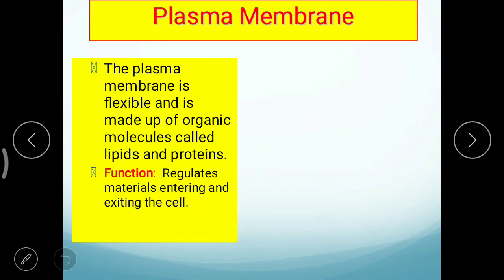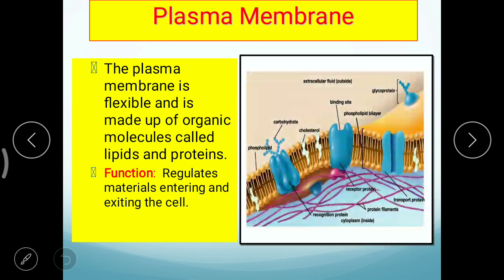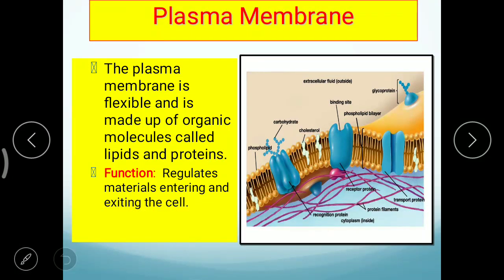Plasma membrane इसमें lipid और protein से बनी होती है — generally glycoprotein and phospholipid bilayer की बनी होती है। इस diagram में दो layers दिख रहे होंगे — एक नीचे और एक ऊपर। यह phospholipid bilayer है और जो blue color के दिख रहे हैं वह proteins हैं — extrinsic और intrinsic proteins होते हैं जो cell membrane के function को regulate करते हैं।